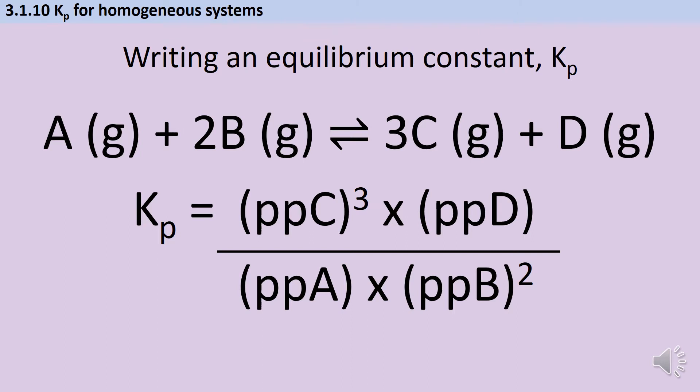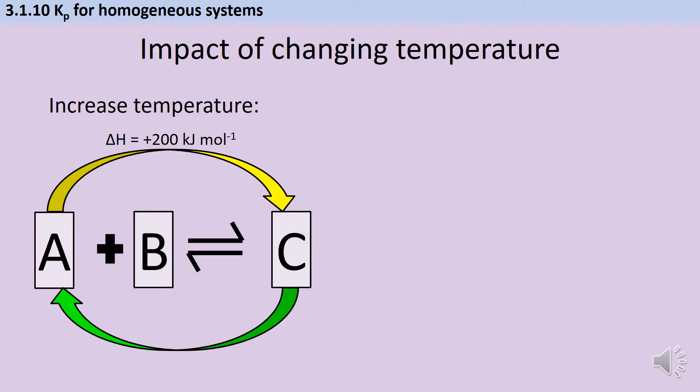Our next step is to consider how both this equilibrium constant and the position of equilibrium are impacted by changes to pressure or temperature or the addition of a catalyst. Let's start by examining what happens to a reaction when we increase the temperature. In this example, reactant A reacts reversibly with reactant B in order to make product C, and we've also been given a delta H value for the forward reaction of positive 200 kJ per mole.